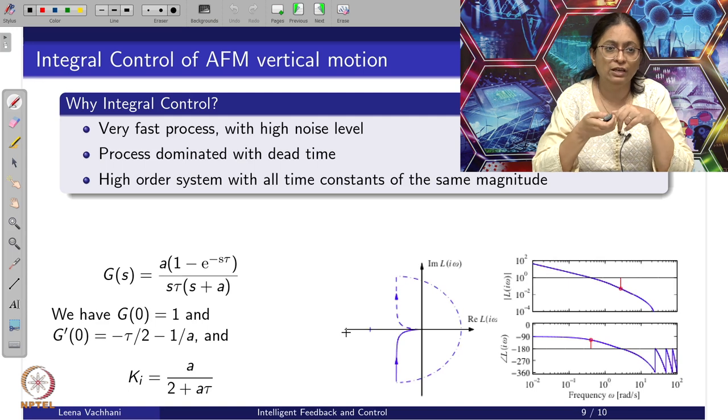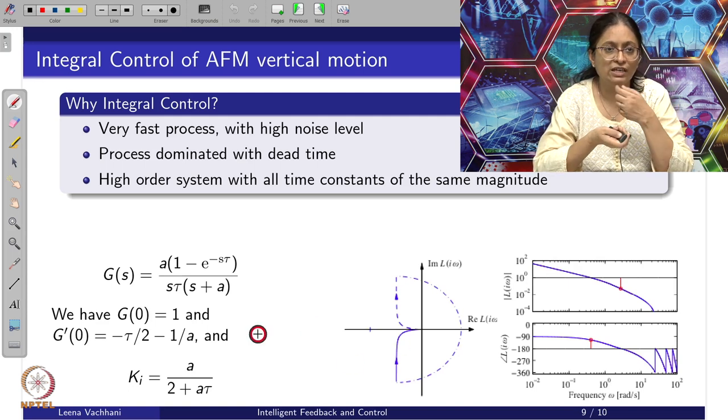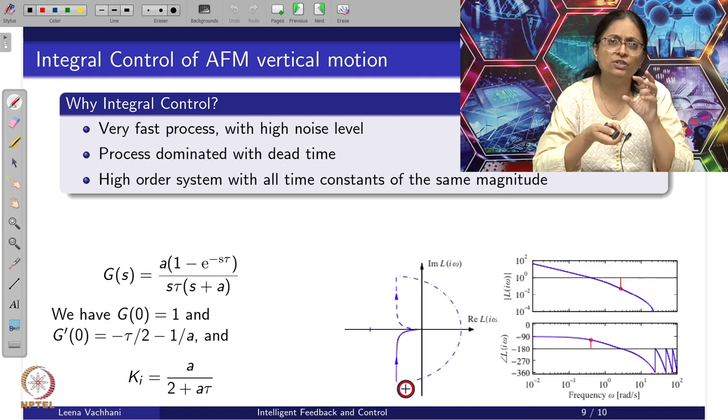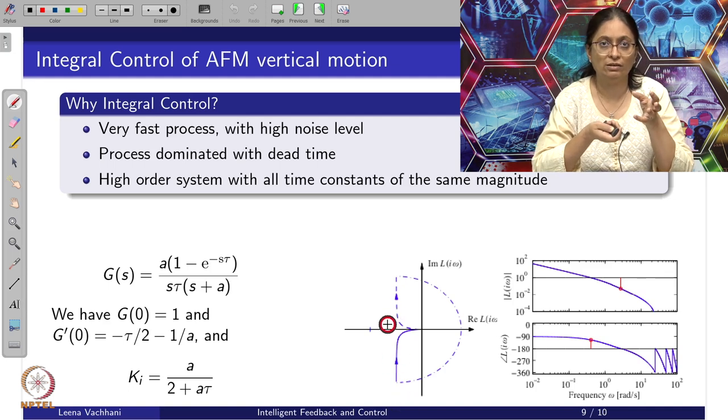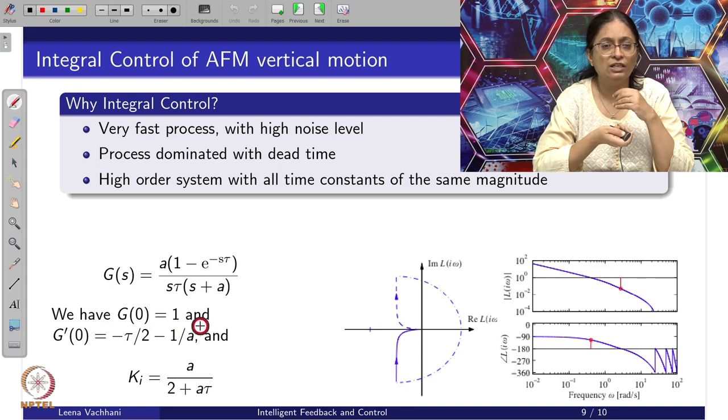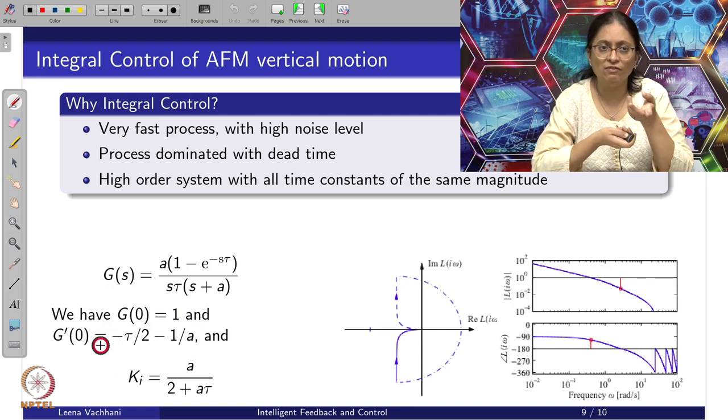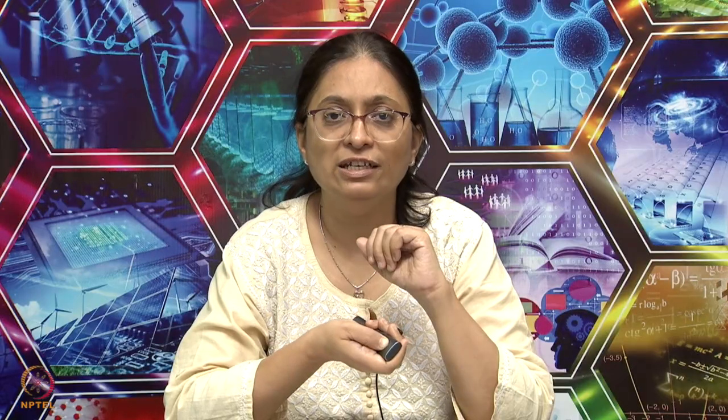The integral control design we have already seen with the help of g of 0, which was the simplest way of designing integral control. In this case, my g of 0 at s equals 0 is equal to 1, and the first derivative of g with respect to s at s equals 0 gives you this. With proper substitution, we get the integral control gain given by a by 2 plus a tau.